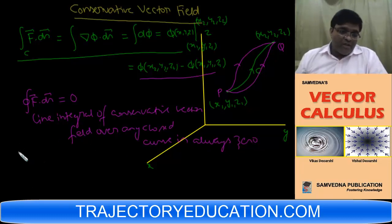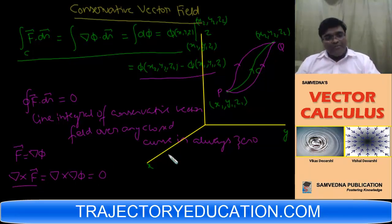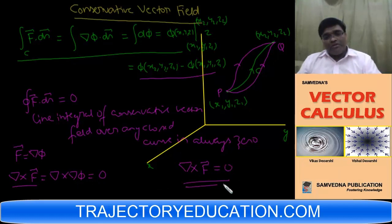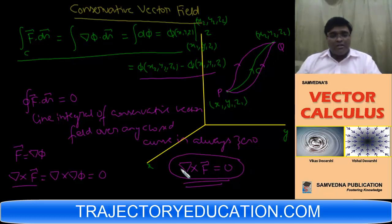The other important property: since conservative fields are expressed as the gradient of a scalar, the curl of F — that is, curl of del Phi — is always zero. This is a very important property: the curl of a conservative field is always zero. So if you are given a field and asked whether it is conservative, the best way is to compute the curl and check whether it is zero. If it is zero, the field is conservative; if non-zero, it is not.